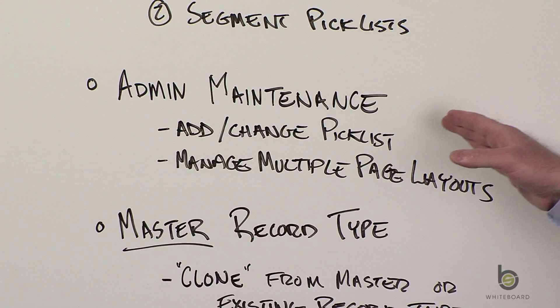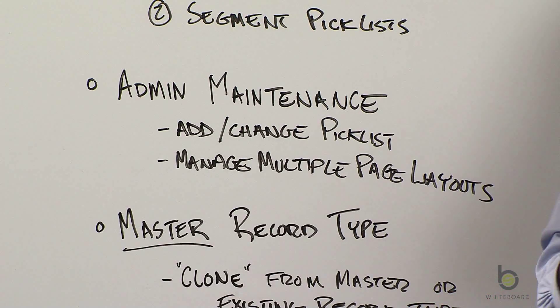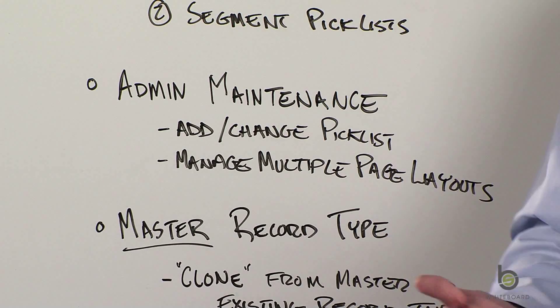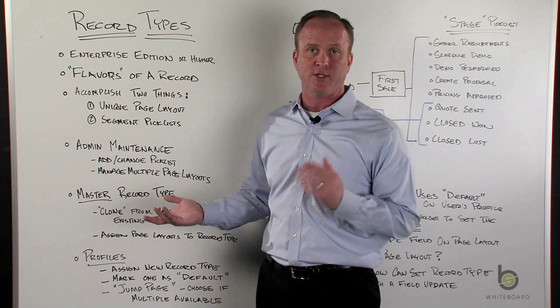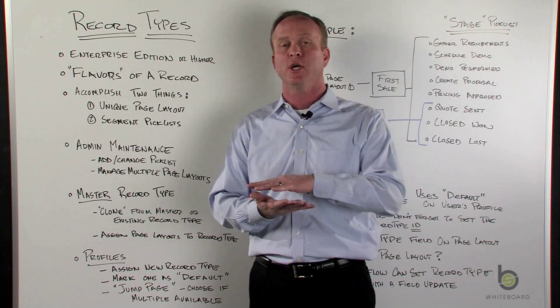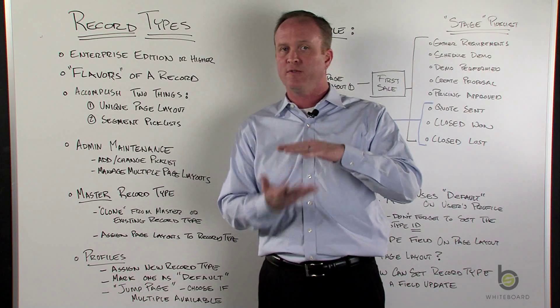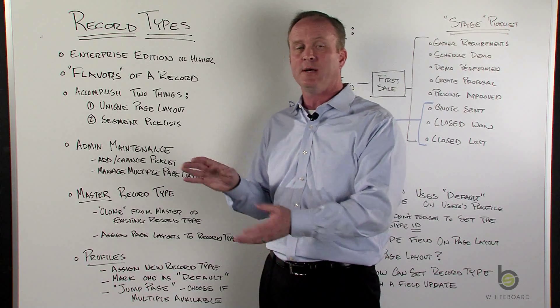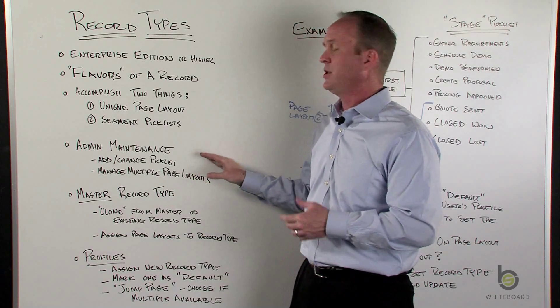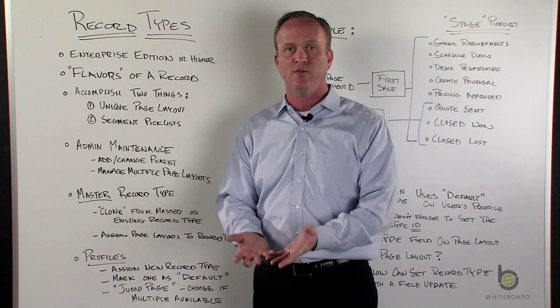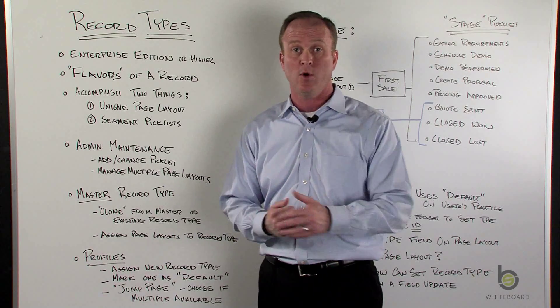When you turn on record types and you start having multiple page layouts, there is some admin, system admin maintenance that's going to come about. Because as you add new fields, you'll have to tell Salesforce which page layout that field's available for. If you update a picklist or add a picklist, you'll have to tell Salesforce how you want to split those picklists. So realize when you go down this path, it's great for your users because you're tailoring the experience. But as a system admin, you're adding a lot more maintenance.